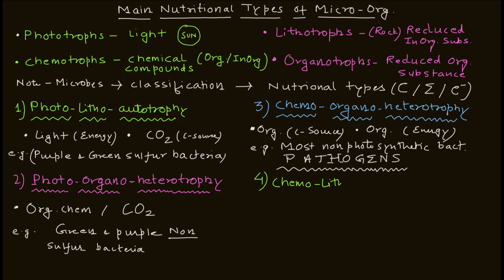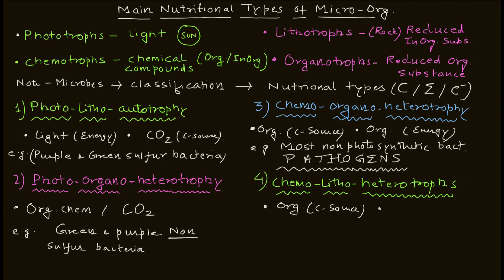The fourth category is chemo litho heterotrophy. 'Chemo' indicates chemical compounds as the energy source, and 'litho' indicates use of inorganic compounds. So you're using organic compounds as the carbon source and inorganic compounds as the energy source. The example for this is some sulfur oxidizing bacteria.